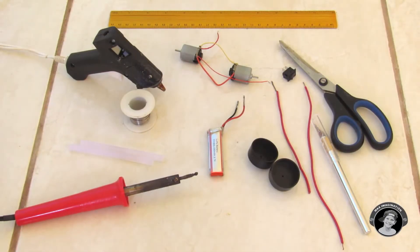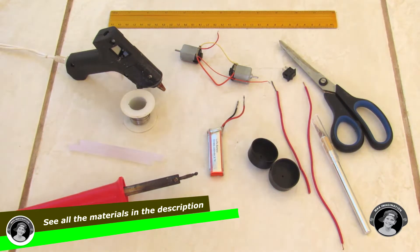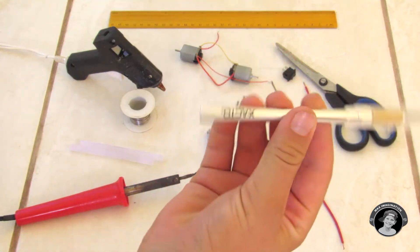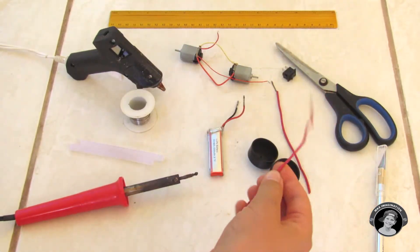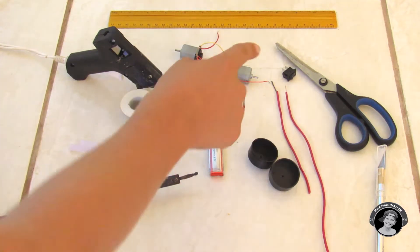So here's all the tools and materials you're going to need in order to make this paper airplane launcher. You will need a ruler, a pair of scissors, an exacto knife, two of these red wires, and an on and off switch.